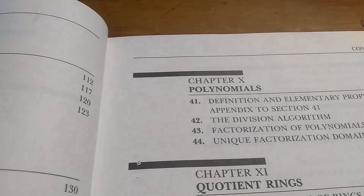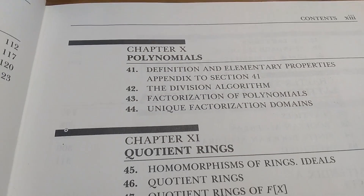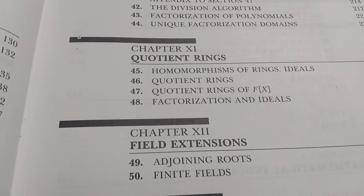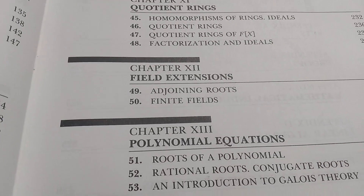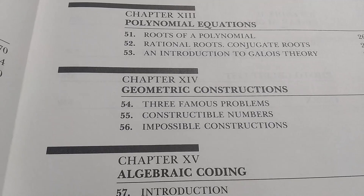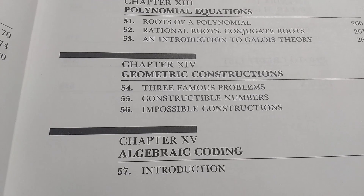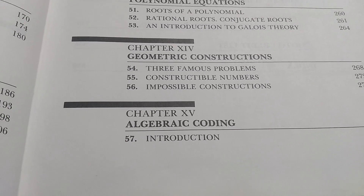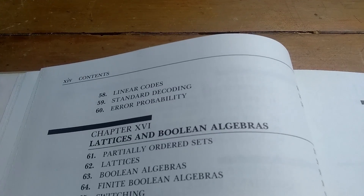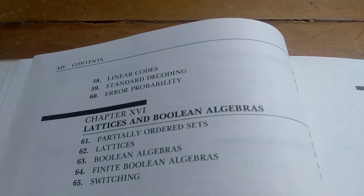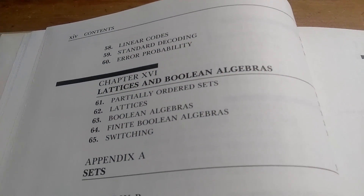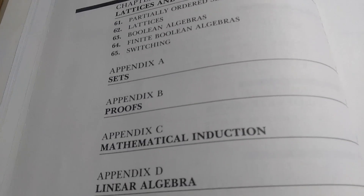He then goes on to some standard topics: polynomials, quotient rings, field extensions, polynomial equations, geometric constructions, and algebraic coding. This is the last page of the table of contents. He also covers lattices and Boolean algebras, and then there are a few appendices.